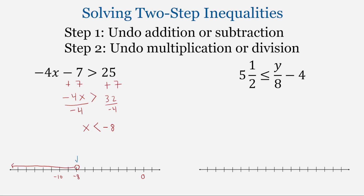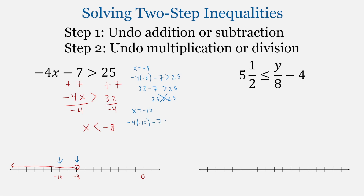Let's quickly check at equality first. At x equal to negative 8, we get negative 4 times negative 8 minus 7 is greater than 25. What we want are the two sides to be equal to each other as we check at the equality point. So this is 32 minus 7 greater than 25, which is 25 greater than 25. This is not true because negative 8 is not part of the solution, but it is where the two sides of the inequality are equal — the boundary of our inequality. Let's check x equal to negative 10: negative 4 times negative 10 minus 7 gives 40 minus 7, which is 33, greater than 25. That's a true statement.